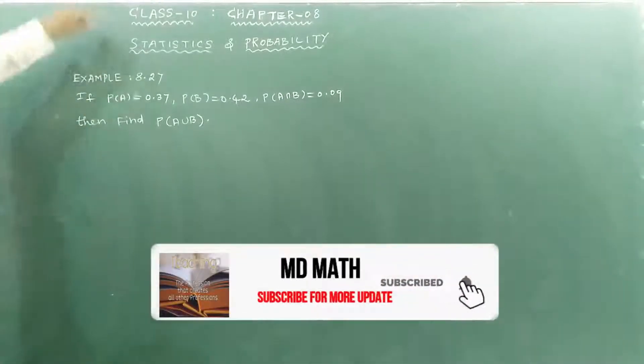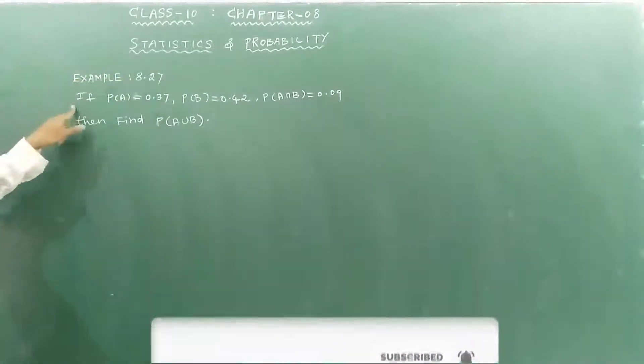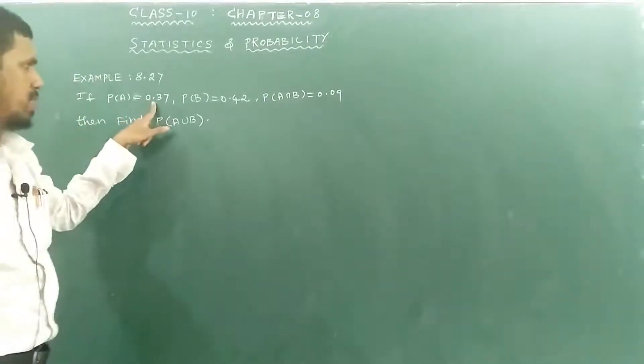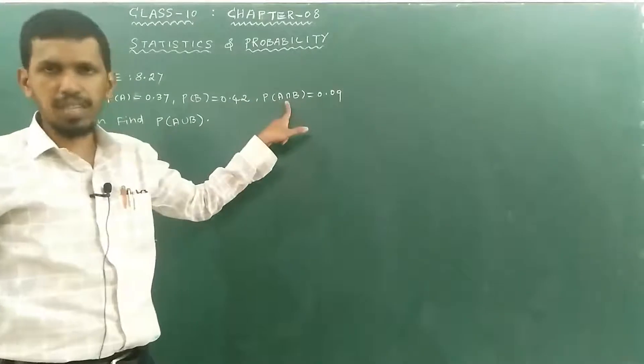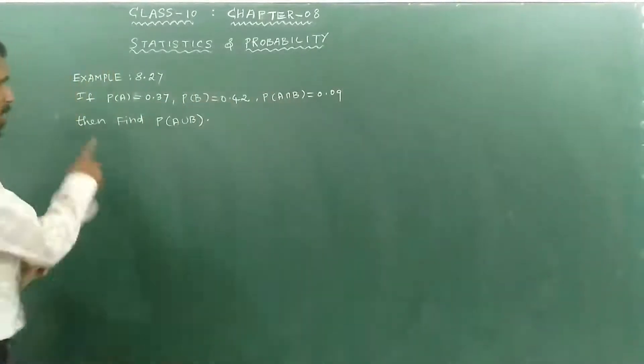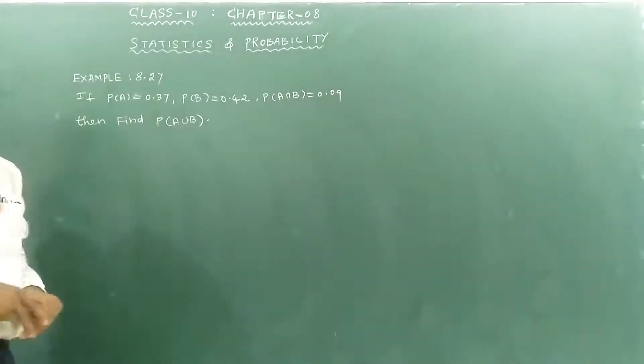Hi everyone, my students. Example 8.27: If P(A) equals 0.37, P(B) equals 0.42, and P(A intersection B) equals 0.09, then find P(A union B).